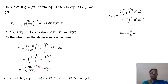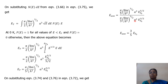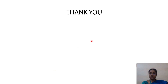Substituting ET and N into the average energy formula, the numerator is (π/5) × (8m/h²)^(3/2) × L³ × EF^(5/2), and the denominator is (π/3) × (8m/h²)^(3/2) × L³ × EF^(3/2). The common terms cancel, and rearranging gives the average energy E_avg = (3/5) EF. Thank you for watching.